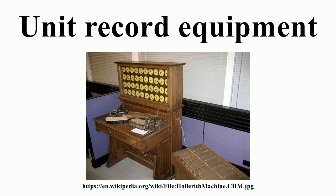Cards were sensed by mechanical, electrical, or later optical sensors. The operation of many machines was directed by the use of a removable plugboard or control panel. Initially all machines were manual or electromechanical. The first use of an electronic component was in 1940 when a gas triode vacuum tube replaced a relay in an IBM card sorter. Electronic components were used on other machines beginning in the late 1940s. The largest supplier of unit record equipment was IBM, and this article largely reflects IBM practice and terminology.